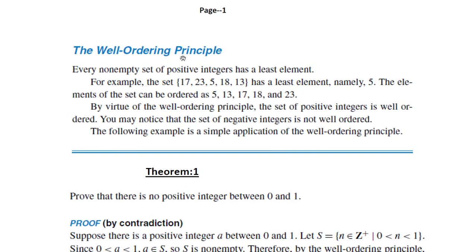The Well-Ordering Principle is a very important principle with big applications, which you will see either in this lecture or the next. The principle states that every non-empty set of positive integers has a least element. For example, if you take the set {17, 23, 5, 18, 13}, this is a set of positive integers and the least element is 5.